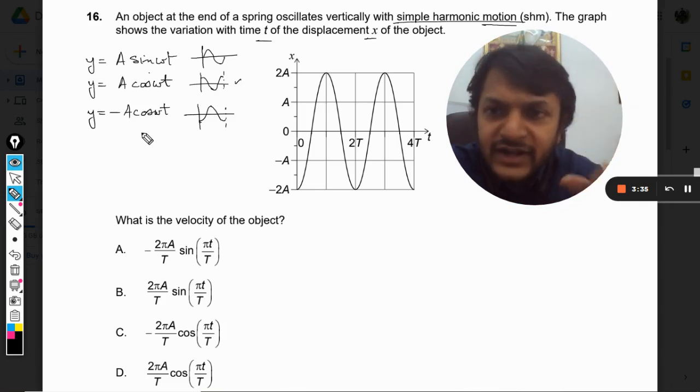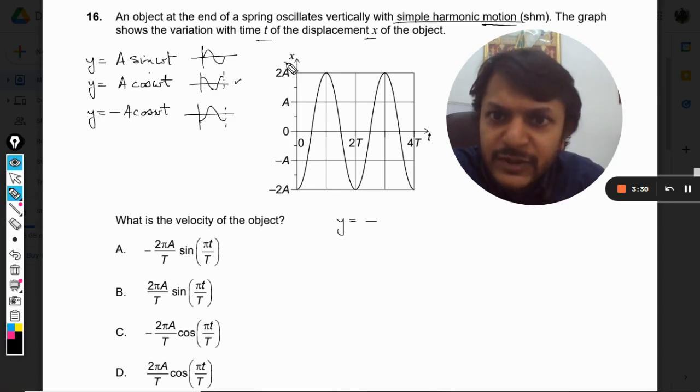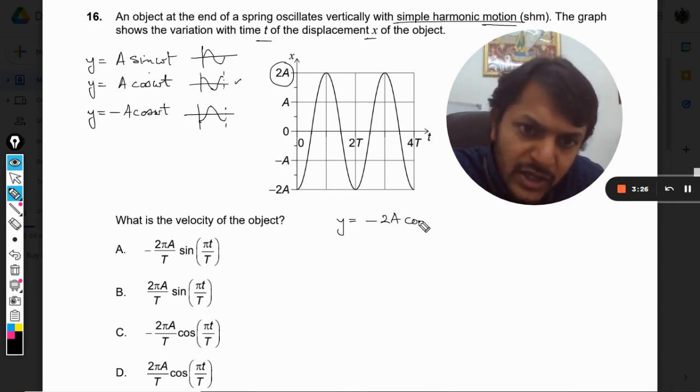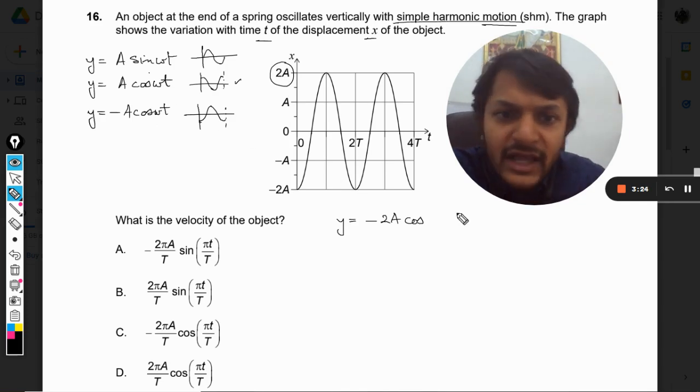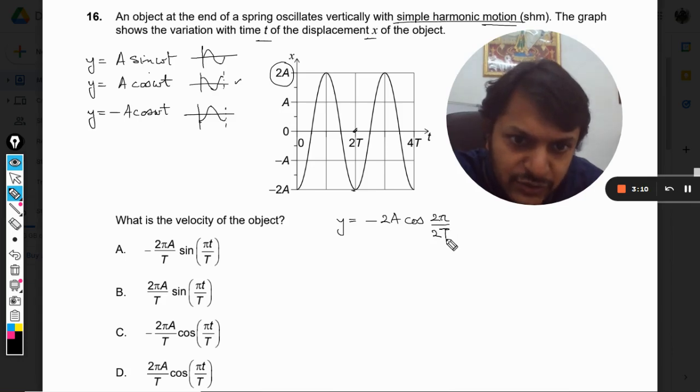For us the displacement curve will be given by amplitude 2A cos, and omega can be written as 2π by capital T, that is the time period for one oscillation. The time period for one oscillation is 2T, so I am substituting 2T here. This will be t, so 2 and 2 gets cancelled.